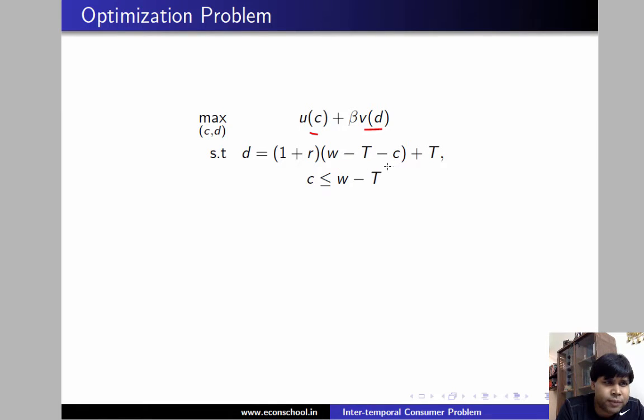T is the taxes that he paid out of his income and C is his consumption plus the interest rate that he is going to earn on it. So plus R times W minus T minus C and obviously he is going to get back those T in period 2 because the government balances its budget. So that's his consumption in period 2.